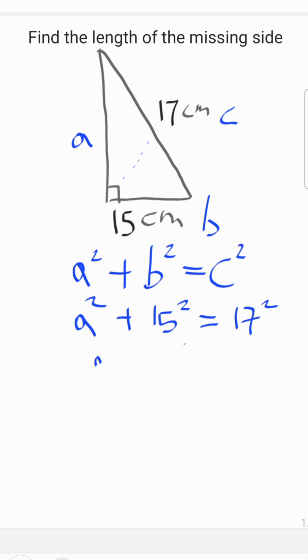Now we're going to need a squared by itself. So we're going to transpose the formula and bring this 15 squared across, which was plus becomes minus.